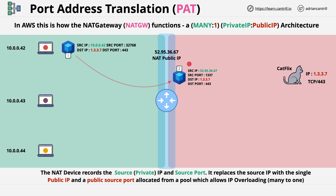If the middle purple laptop did the same thing, the same process would be followed. It would record all of this information, it would allocate a new public source port, and would translate the packet — adjusting the packet's source IP address and the source port to these newly defined values.